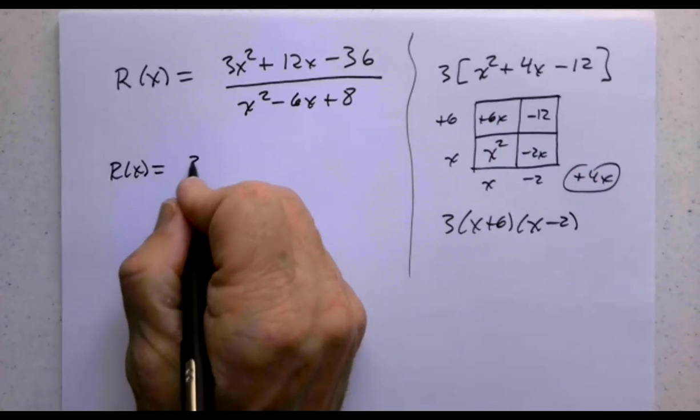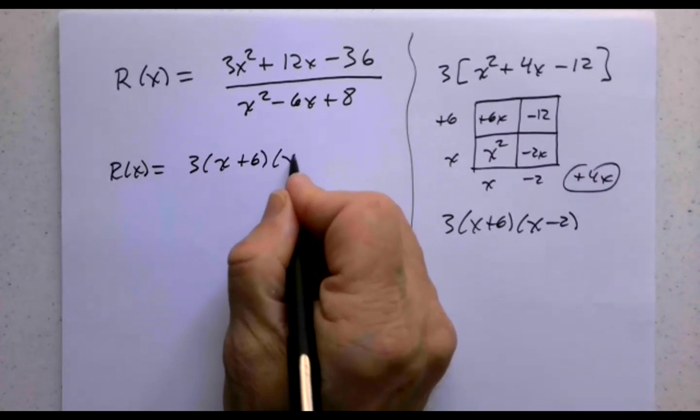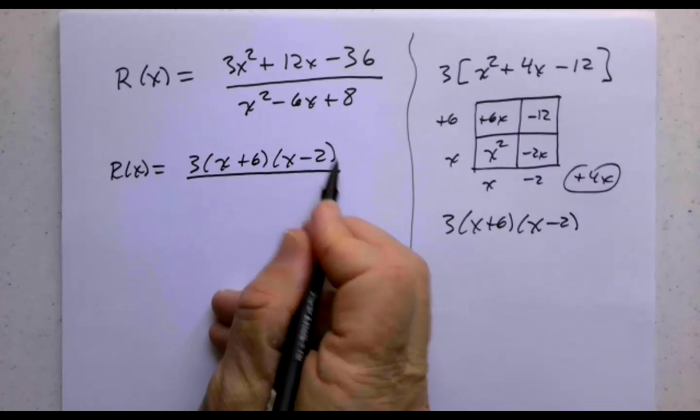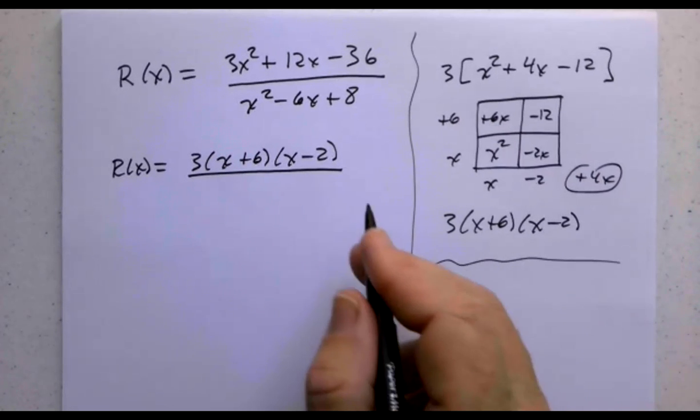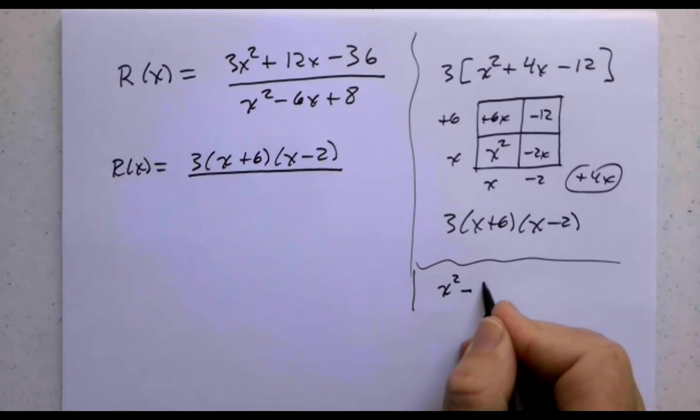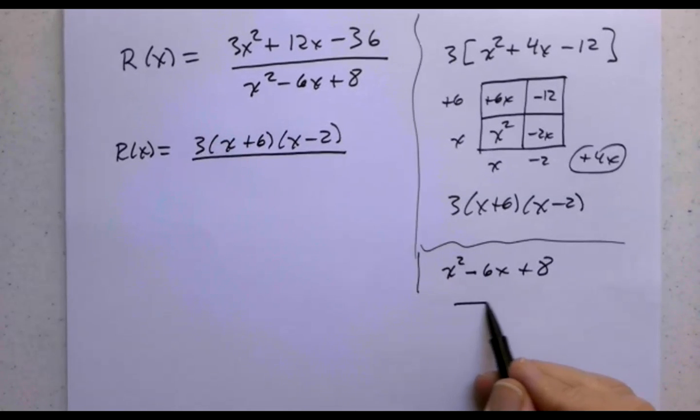So R of x is 3 times x plus 6 times x minus 2 divided by, now let's go ahead and factor the denominator. We have x squared minus 6x plus 8. Let's analyze that.